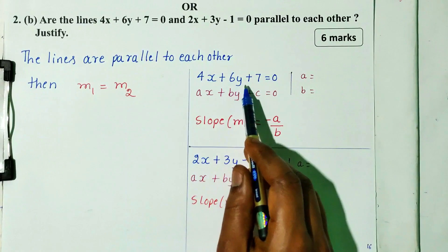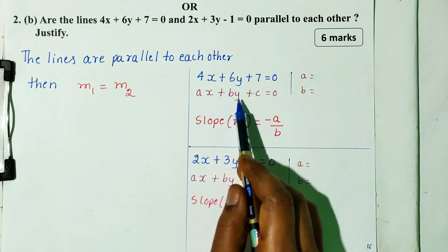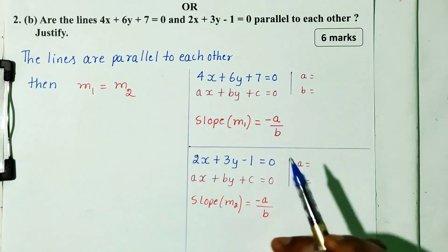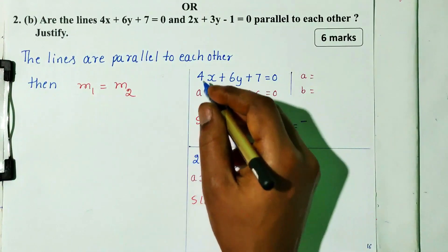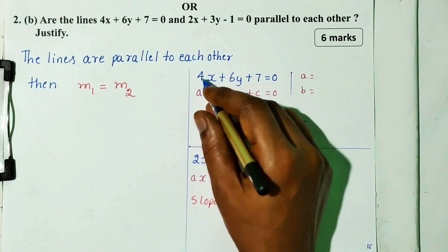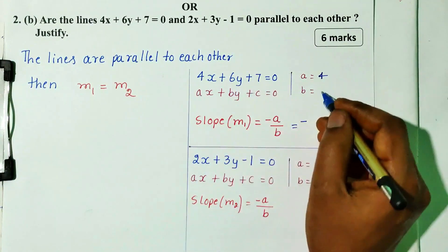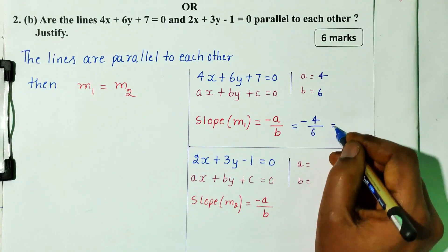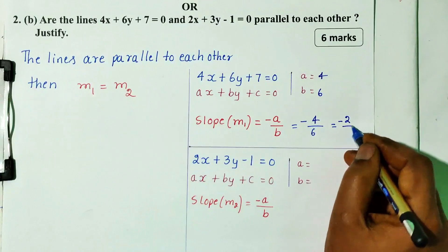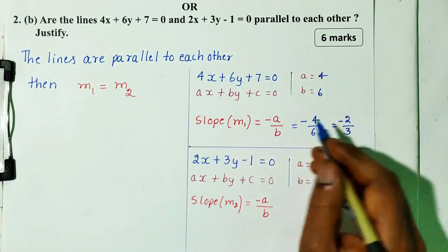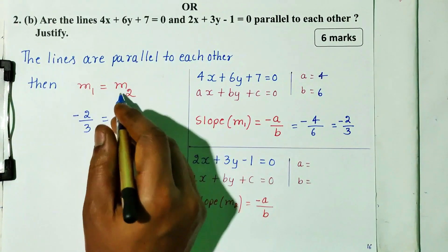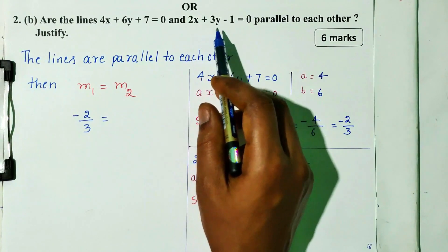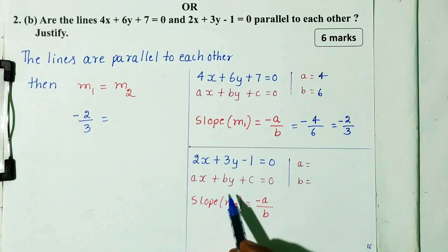First equation is 4x plus 6y plus 7 equal to 0. Using the slope formula m1 equal to minus a divided by b: a is equal to 4, b is equal to 6. Substituting, m1 is equal to minus 4 divided by 6, which simplifies to minus 2 divided by 3. Second equation is 2x plus 3y minus 1 equal to 0.